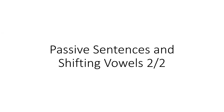In the first video of passive sentences and shifting vowels, we looked over the control passive with the tongue ending and some complications with shifting vowels and the i-stems. In this video, we will go over non-control passive with the ng and ng endings, and also shifting vowels in non-control stems.